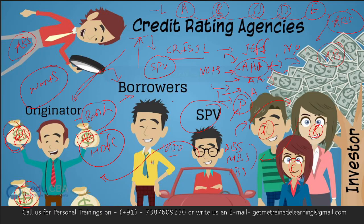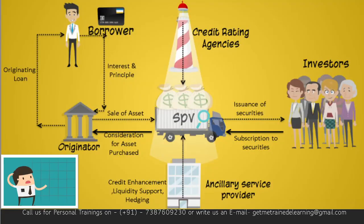Let me show you how this works in an image. The special purpose vehicle here is essentially a pool account — think of it simply as a bank account managed by an entity, say ABC LLP. Don't be confused by the word 'pool' — it just means a bank account. The entity ABC LLP will create one pool or bank account. HDFC Bank originates the loans — meaning it issues loans to borrowers for credit cards, home loans, auto loans, machinery loans, and business loans.